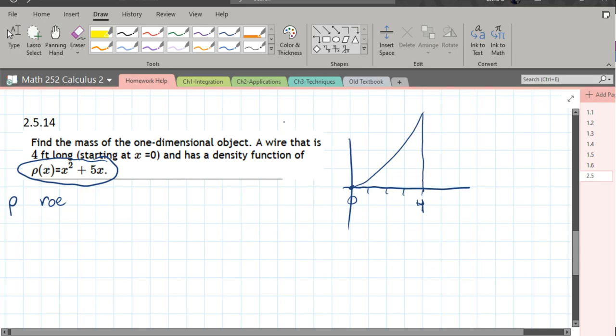Alright, all we need to do is figure out this area. The area is equal to the mass when the height is the density function.